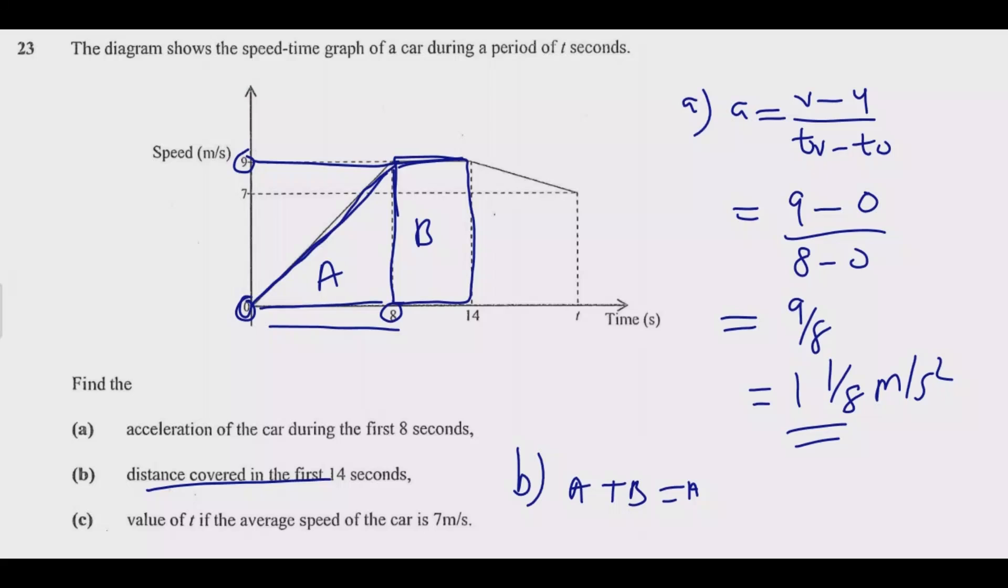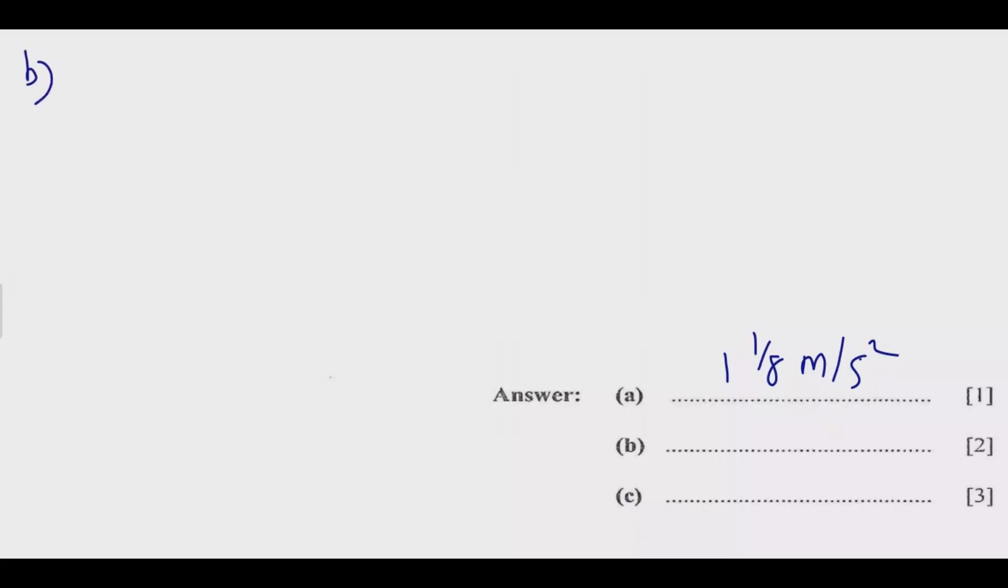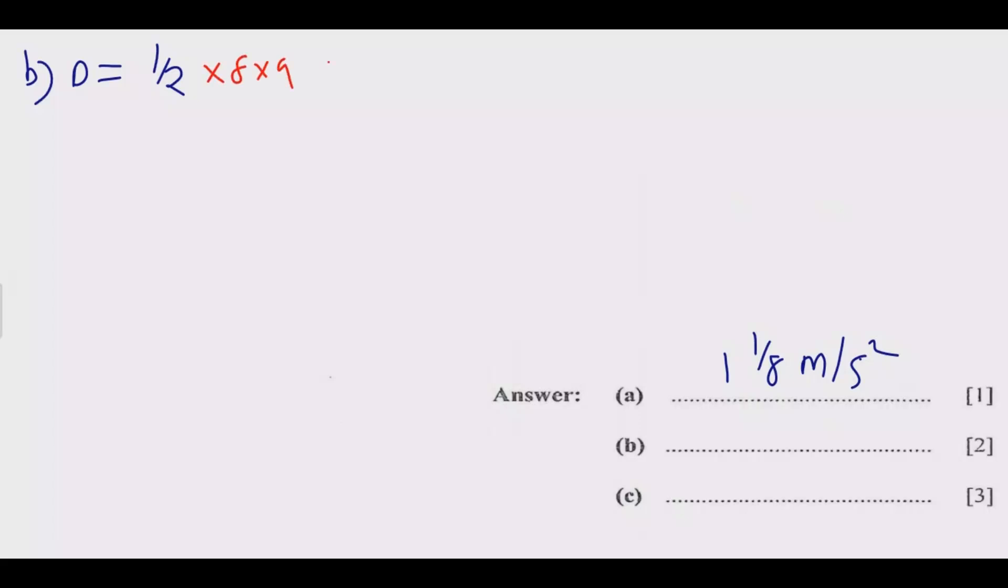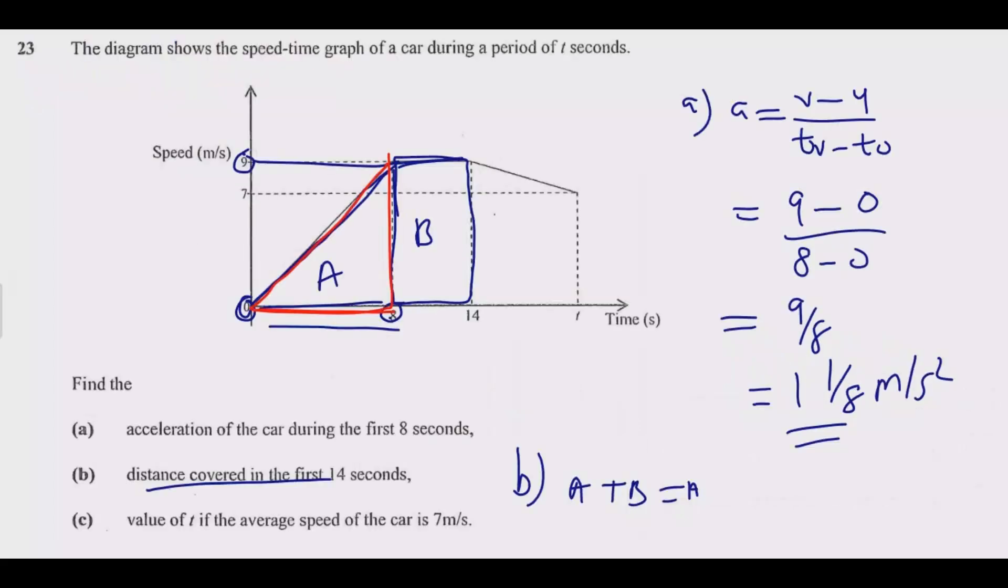So find the area. You see, multiply 9 and 8 by half, then the other one. So let us just find the answer to B. Distance is equal to half times the area under this triangle, which will be 8 times 9, then plus the area under this rectangle.